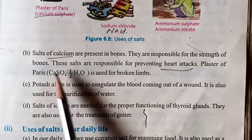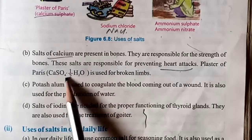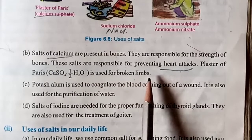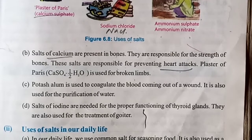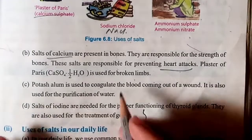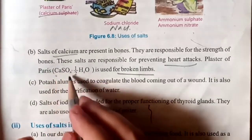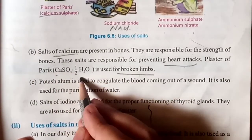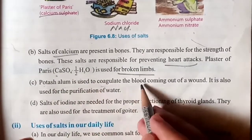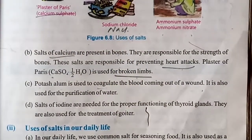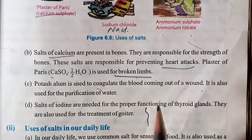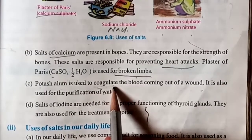Plaster of Paris — calcium sulfate hemihydrate (CaSO₄·2H₂O) — is an important salt used in medical applications, particularly for setting broken bones.